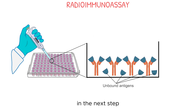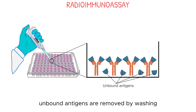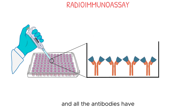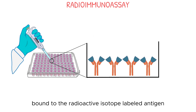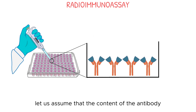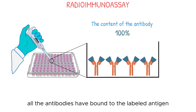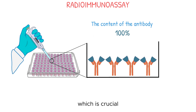In the next step, unbound antigens are removed by washing. Now, one well is coated with the antibody and all the antibodies have bound to the radioactive isotope labeled antigen. Therefore, let us assume that the content of the antibody or radioactive substance is 100%, as all the antibodies have bound to the labeled antigen, which is crucial.